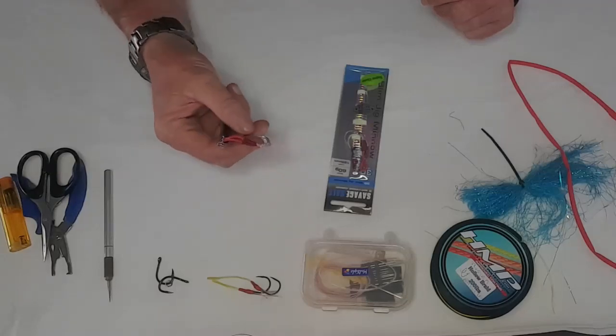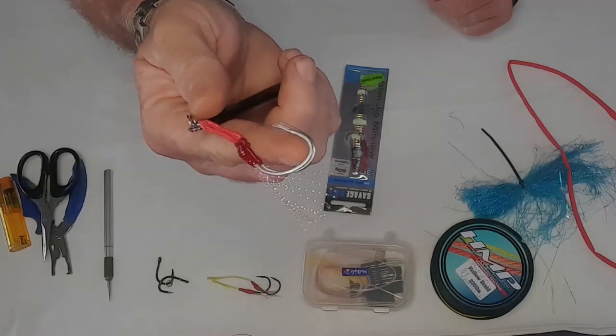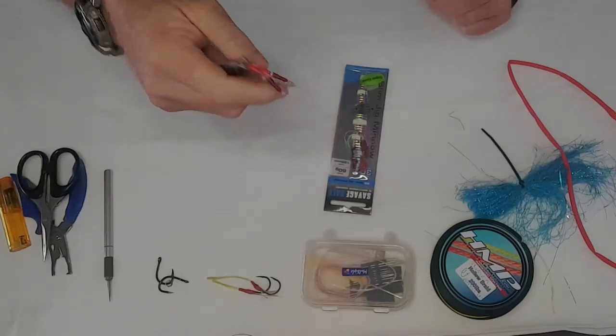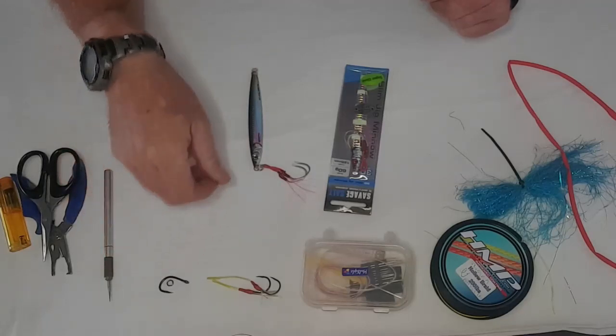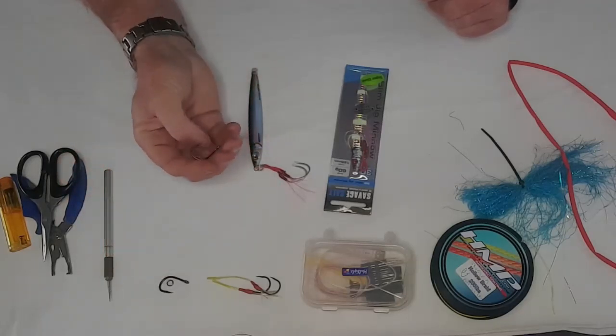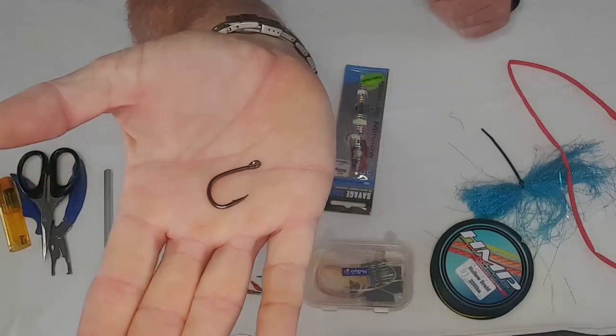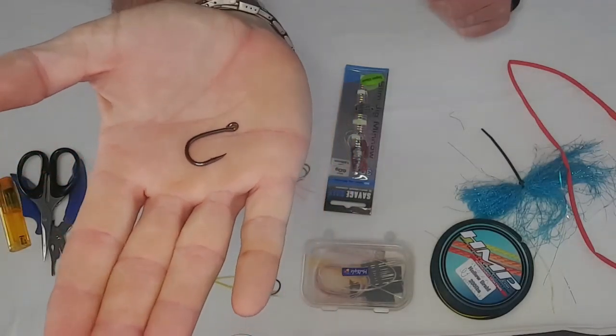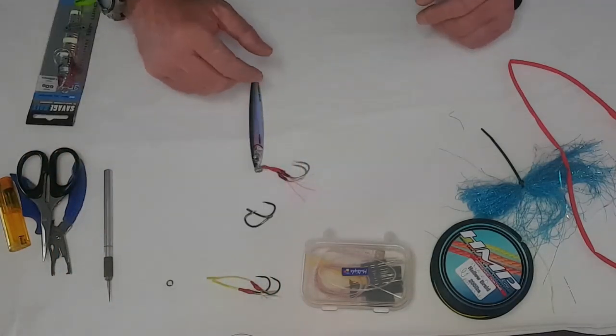The 60 gram is quite a small jig and the Savage Gear hooks that come on it are quite large. Nothing wrong with these, but what we're going to do today is remove those and I can use them as spares. I'm going to build myself two brand new assist hooks using these Eagle Claw live bait hooks.